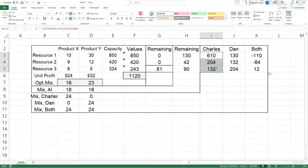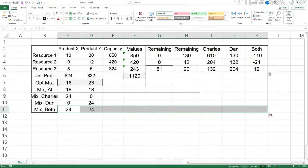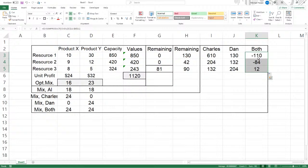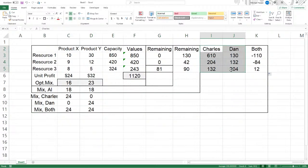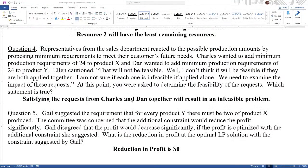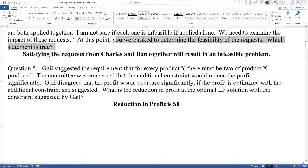Charles and Dan are fine. These are positive results, so that's not infeasible. When you have a negative, that simply means your capacity is not enough to meet this mix. You have a negative requirement here. Requirement of 110 more, 84 more, there's enough resource three. So both will be, this indicates an infeasible LP. Both will be infeasible. Charles can, if only Charles. Dan can, if only Dan, but you can't do both. So we come back here and say satisfying the request from Charles and Dan together will result in an infeasible problem, which is true.